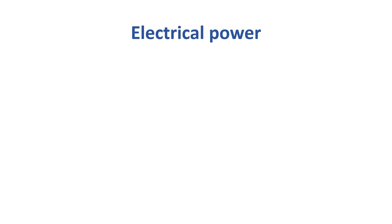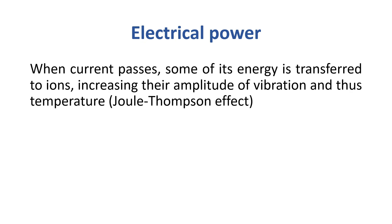What is electrical power? When current passes, some of its energy is transferred to ions, increasing their amplitude of vibration and thus temperature. This is called the Joule-Thompson effect.